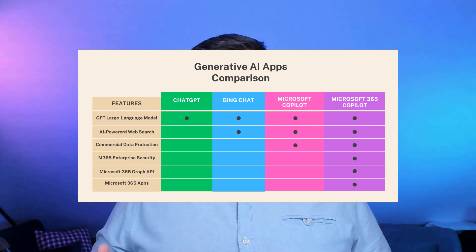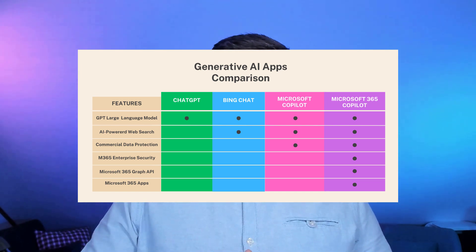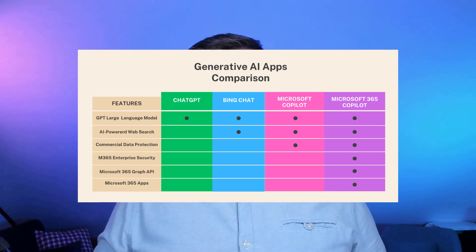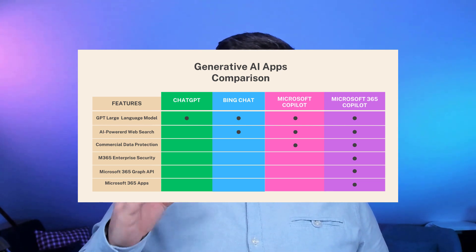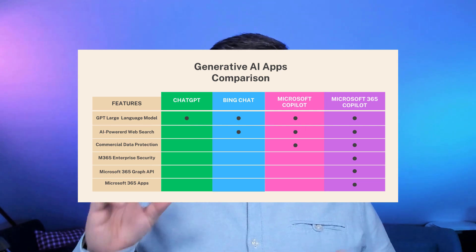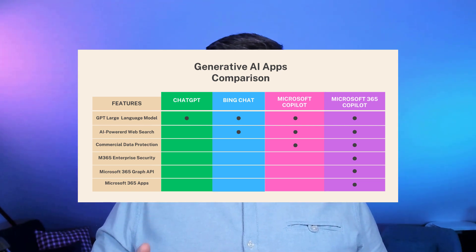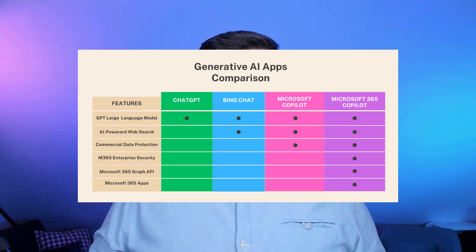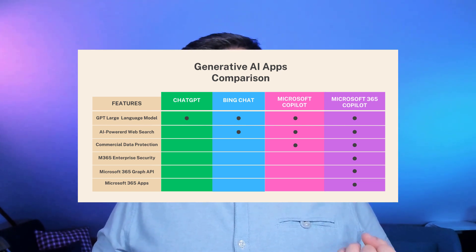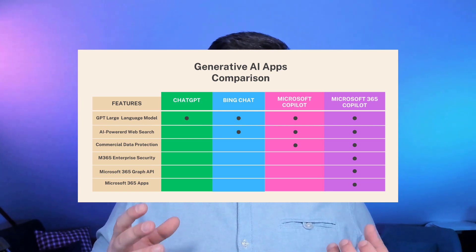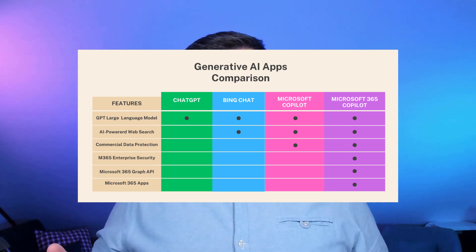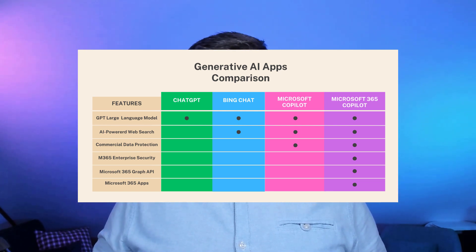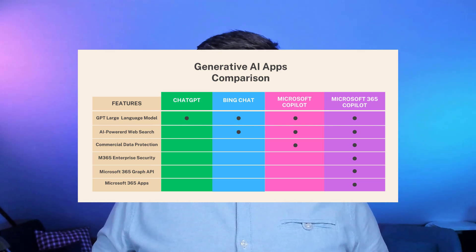If you want to use Microsoft Copilot, aka BingChat Enterprise, you get a very similar experience to BingChat, but with enterprise protection. Your data — whether you upload files, pictures, or text — will never be shared with Microsoft or OpenAI, and the large language model will not learn on it. Moreover, all of the data is held in cache and will be erased after the session is closed. You need Microsoft 365 E3 or E5 licenses to have these capabilities.